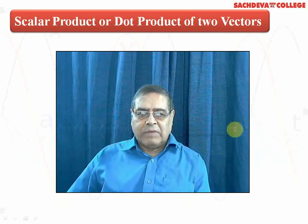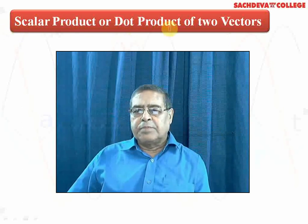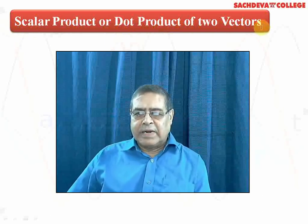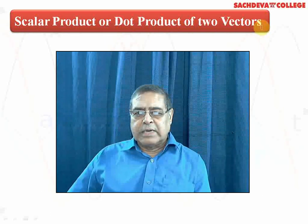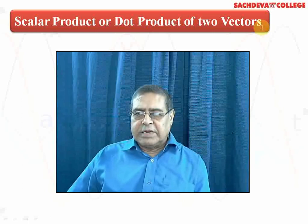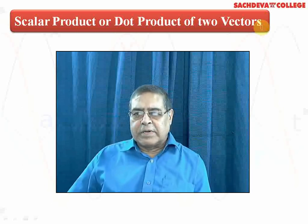Our main discussion will start from the scalar product or the dot product of two vectors. When we use two vectors, we can select any two vectors like forces F1 and F2, or suppose there are two vectors A and B. We have to go through the scalar product or the dot product of the two vectors. When we use the term vector, we take A and B and put an arrow on the head. If we want to take the magnitude, the arrow is to be removed.